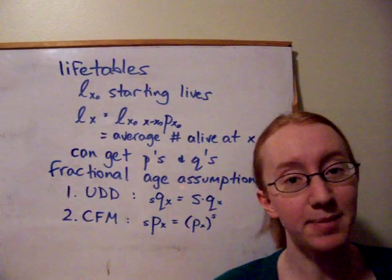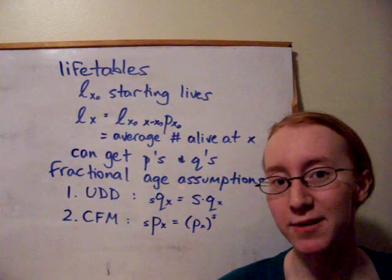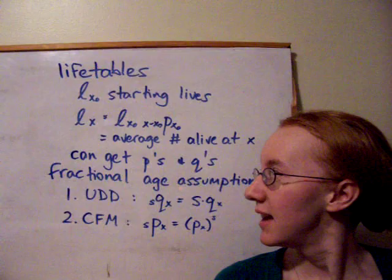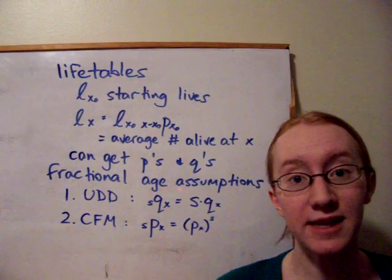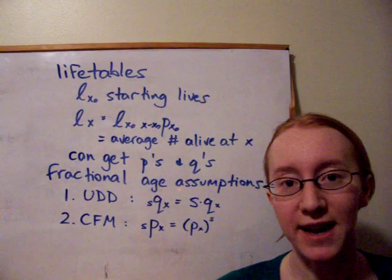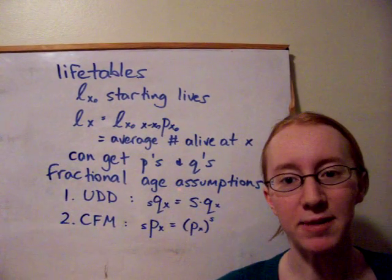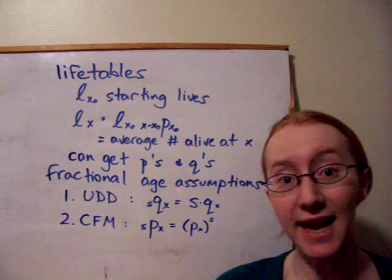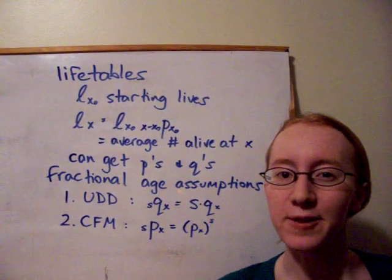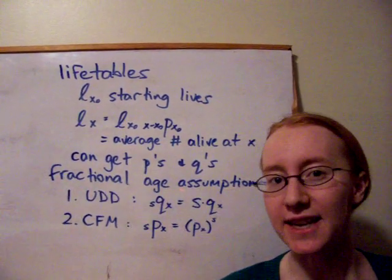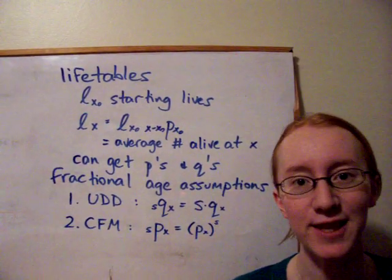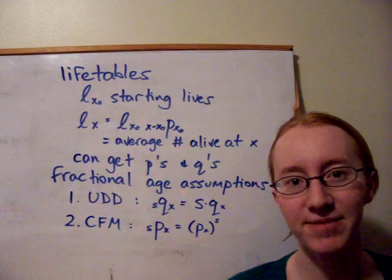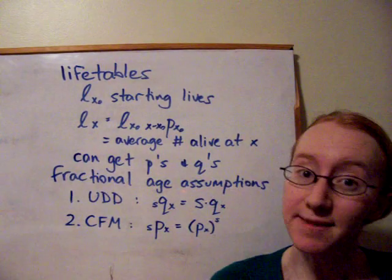Technically, LX is actually the expectation of a binomial random variable capital LX. From just this one sequence of values, we can actually get information about all P's, Q's, and deferred Q's when we're looking for integer ages and integer durations. So it's really useful — just from this one sequence we can get all of that information.